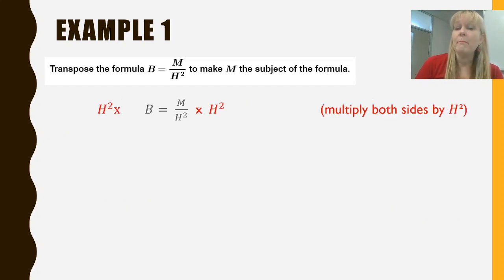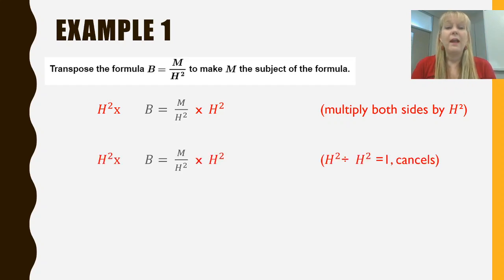Firstly if I was to multiply both sides of the equation by h squared what I'm effectively going to be having on one side of the equation is h squared times b but on the other side of the equation I've now got h squared divided by h squared which makes 1, anything divided by itself gives 1. So that's going to cancel the h squared on that side of the equation. And presto we've now got h squared b on one side and m is sitting all alone. It was as easy as that. This is one of the simple examples because we really only had to do one thing to get m to be the subject of the formula.